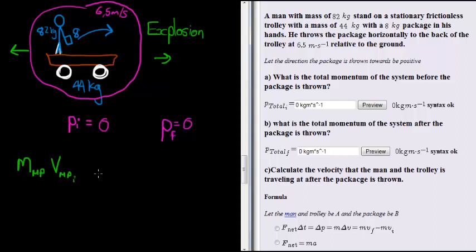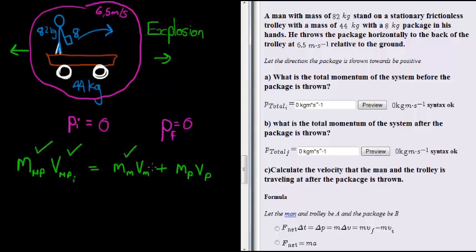Afterwards, however, we have the mass of the man — lowercase m — which obviously includes the trolley, and the velocity of the man and trolley. Then we have the package, which has been thrown and is detached from the man — so we have the mass of the package and the velocity of the package. Very important: as we are heading in different directions, signs matter. Let the direction the package is thrown towards be positive — that is our positive direction, and the opposite is negative.